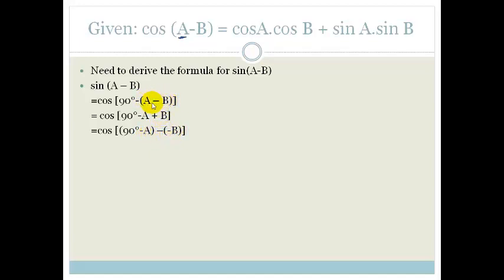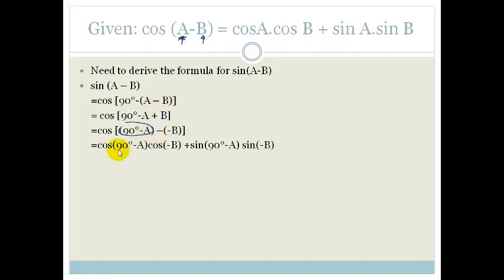Why do we regroup? Because if we regroup, we can see that (90° - A) plays the role of A, and (-B) plays the role of B, and now we can substitute into the formula. So we get: cos(90° - A) cos(-B) + sin(90° - A) sin(-B).